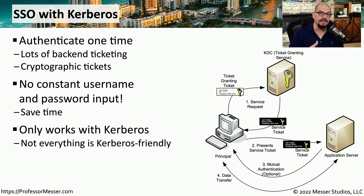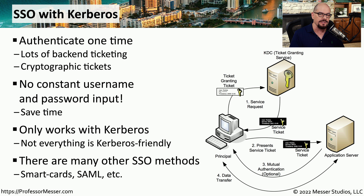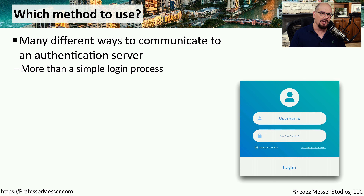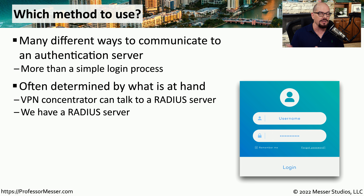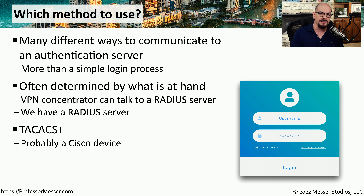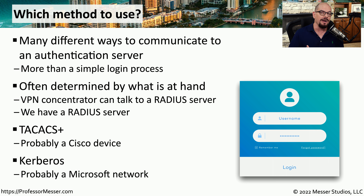This method of single sign-on is specific to Kerberos, but there are many other ways to provide single sign-on, either through devices or services local on your network or cloud-based single sign-on services. So if you have the choice of RADIUS, TACACS+, and Kerberos, which authentication method should you use? Often it tends to be a case of whatever is available on your current network. If you have a VPN concentrator that talks to RADIUS and you've already set up a RADIUS server, you'll probably use RADIUS. If you have many Cisco devices that commonly use TACACS+, then you probably have a TACACS+ AAA server. And if you're using Microsoft Windows, you're obviously using Kerberos to access your Active Directory domain.